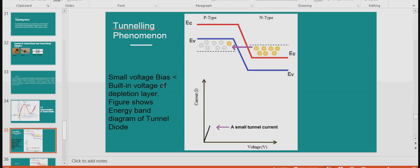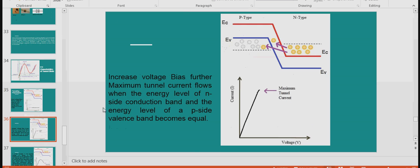The following energy band diagram shows how the V-I characteristics of tunnel diode is obtained. First, the small voltage bias less than built-in voltage of depletion region. Figure shows the energy band diagram of the tunnel diode when the applied bias is less than depletion region built-in voltage. This is the energy band diagram showing conduction band of P-type semiconductor and conduction band of N-type semiconductor, the valence band of P-type semiconductor.